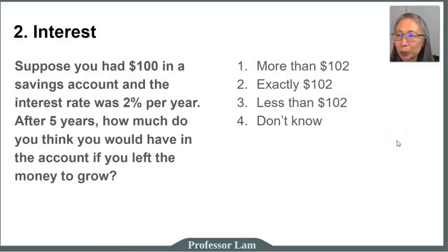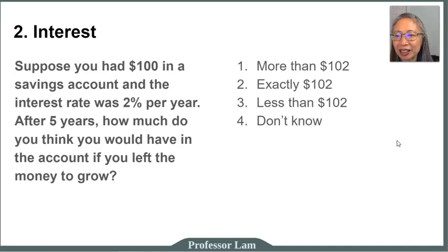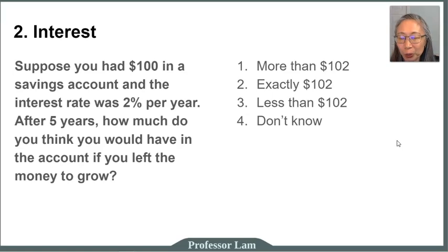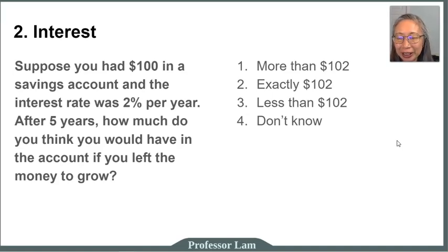Question two has to do with interest. Suppose you have $100 in a savings account and the interest rate was 2% per year. After five years, how much do you think you would have in the account if you left the money to grow? Answer one is more than $102. Two is exactly $102. Three is less than $102. Four is I don't know. Write down your answer.